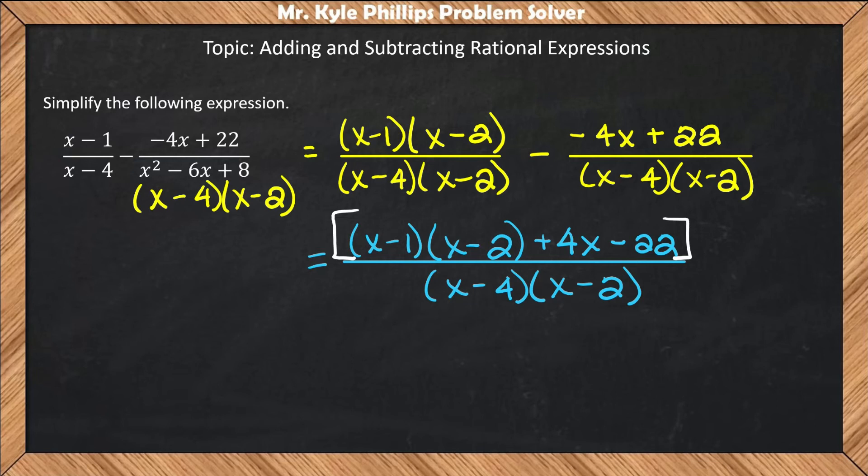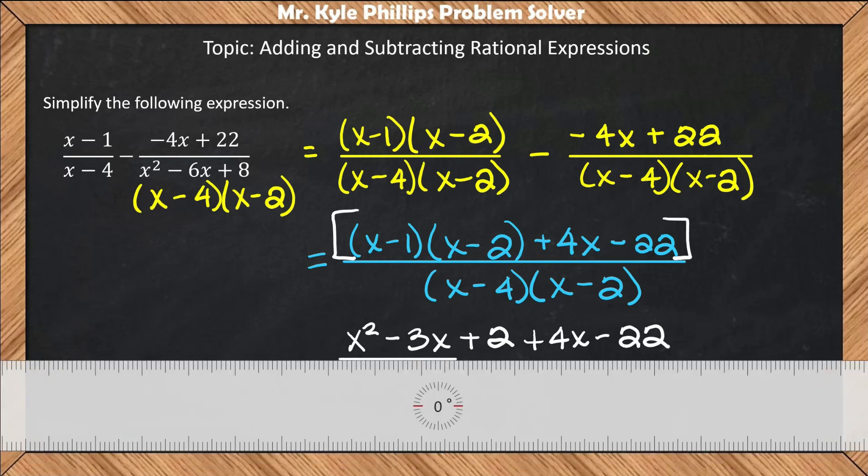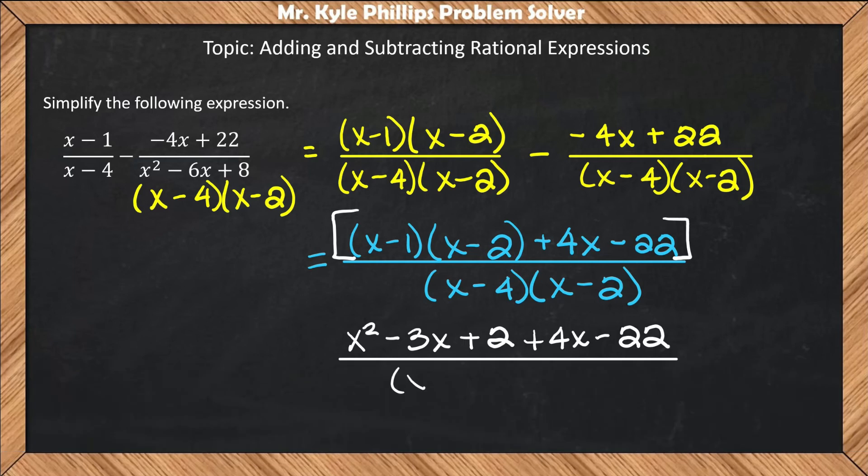And in order to solve, what we're going to have to do is multiply this x minus 1 and this x minus 2 together and then combine our like terms with 4x and negative 22. So let's do that. So x times x is going to give us x squared. That's going to wind up being negative 3x plus 2 plus 4x minus 22. We'll come down and put this all over x minus 4 and x minus 2.